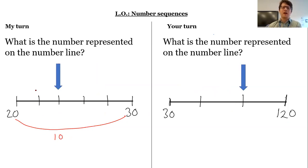20 to 30, I need to add 10. So the difference is 10. How many equal parts are there? There's 1, 2, 3, 4, 5. So if I divide 10 by 5, I get 2. So each part is worth 2. So I'm counting in 2s. 22, 24, 26, 28, 30. So then I can see really clearly that the arrow is pointing at the number 24.